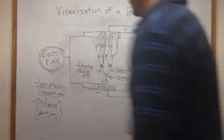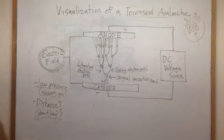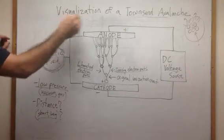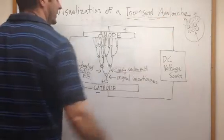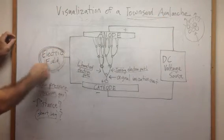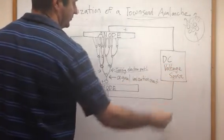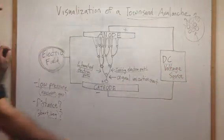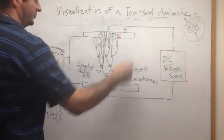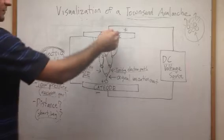This is a Townsend avalanche. You have an electric field which is produced by a DC voltage source, such as a battery, and you have a positive charge on this end and a negative charge on that end. That's the cathode. This is the anode.